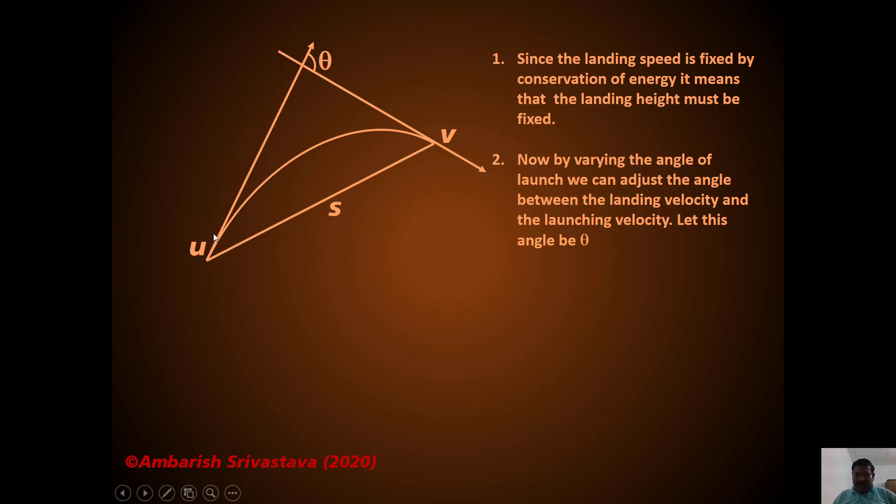What else can we say? Now by varying the angle of launch, we can adjust the angle between the landing velocity and the launching velocity. So you know that if you throw it vertically upwards, the landing velocity will be just vertically downwards and it will be an angle of 180 degrees. And you can also throw it almost horizontally and then there will be some very small angle between U and V. So the point is that by varying the direction of U, you can vary the direction of V and theta is the angle between them.